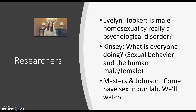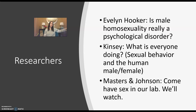Masters and Johnson were biological and physiological researchers, known for inviting people to come have sex in their lab while they watched and took notes. They received pushback mainly for the accusation that people who volunteer to come have sex in your lab while you're watching are not representative of the average person. Their argument was: you're probably right, but it doesn't matter — because biology is biology, and the orgasmic response of a prostitute is the same as that of a secretary or housewife. It's physiology; it doesn't matter who the person is.